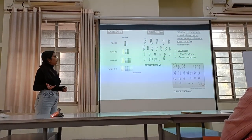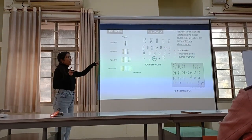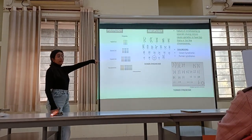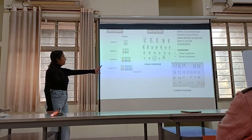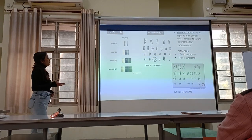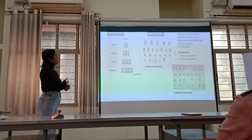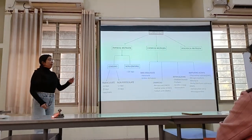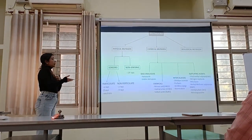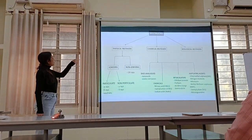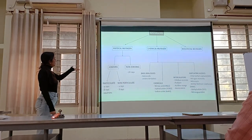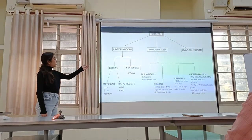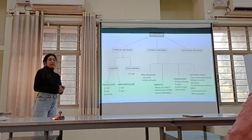In polyploidy there are duplications of entire sets of chromosomes, and in aneuploidy there is a single chromosome duplication or loss. For example, in Down syndrome there is a single extra chromosome at position 21. Failure of chromosomes to separate during meiosis may cause offspring to have too many or too few chromosomes, which is known as aneuploidy. A mutagen is anything that causes mutation. There may be physical mutagens, chemical mutagens, and biological mutagens. Physical mutagens are further classified into ionizing and non-ionizing. Chemical mutagens are further classified into base analogs and other chemicals. Biological mutagens may include viruses and some bacteria.